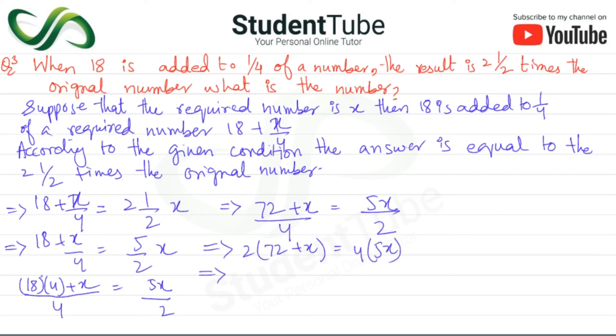So 2 times 72 becomes 144 plus 2x is equal to 20x. So 20x on one side, that is 2x minus 20x is equal to minus 144, so we have minus 18x is equal to minus 144.